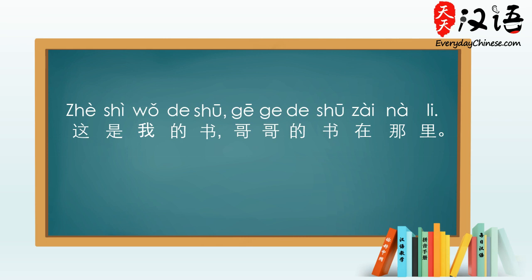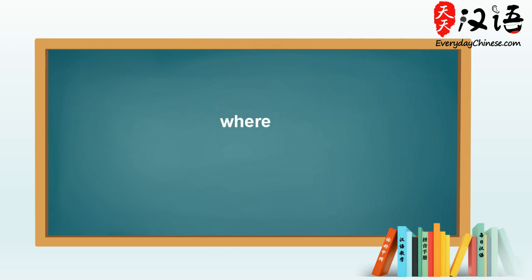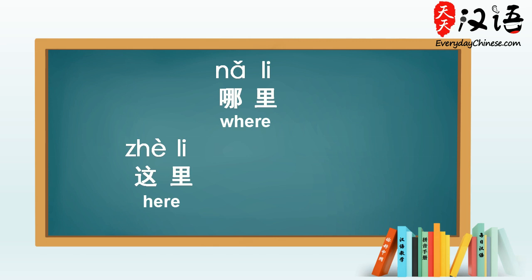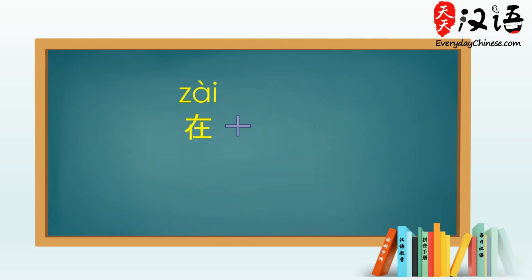这是我的书. 哥哥的书在那里. This is my book, and my elder brother's book is over there. In lesson 28, we learned three words relating to location: where — 哪里; here — 这里; and there — 那里. To express that someone, something, or some place is here or over there, don't forget to use the verb 在 before 这里 and 那里. To specify the location, you can use 在 plus the place.